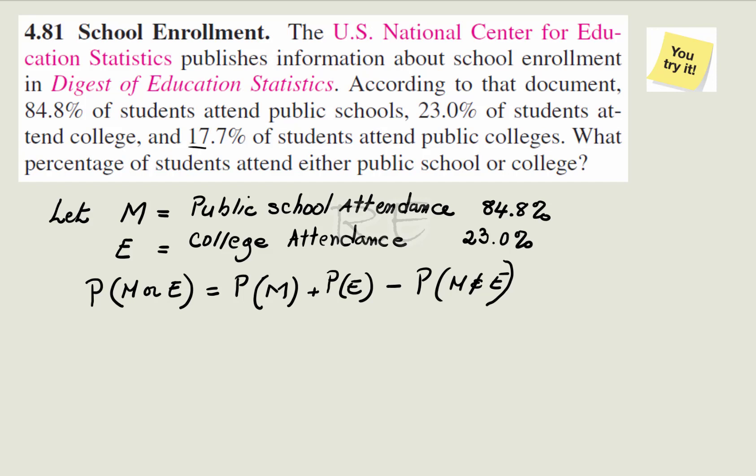And P of M and E is 17.7%. So, P of M or E is equal to 84.8% plus 23.0% minus 17.7%.